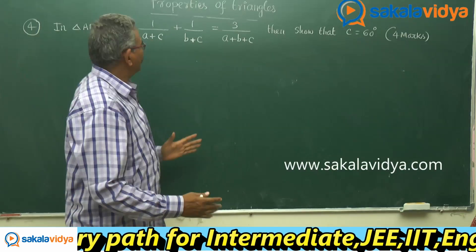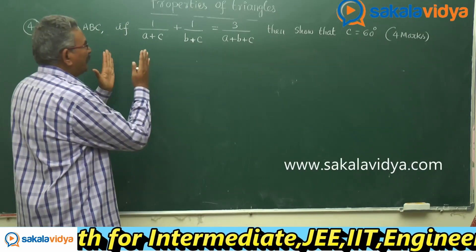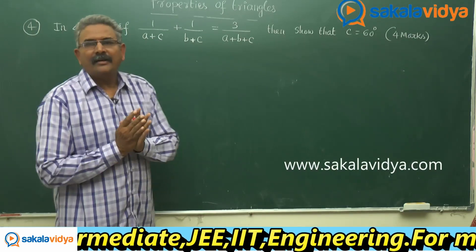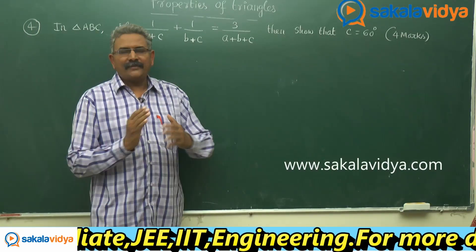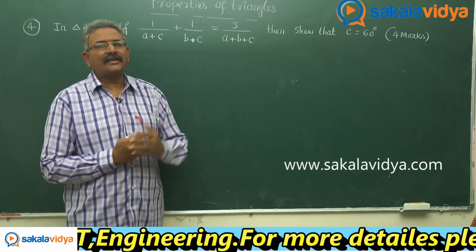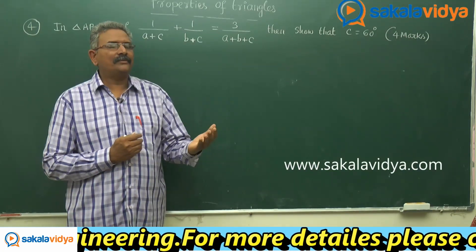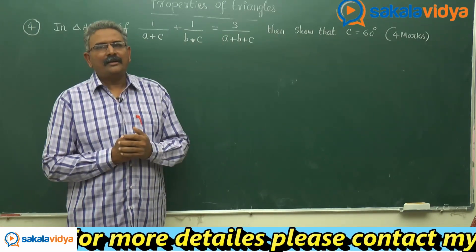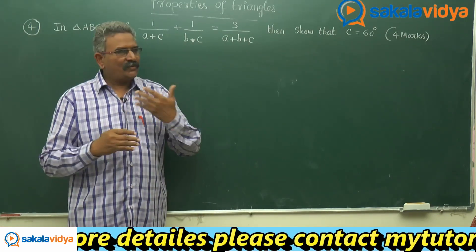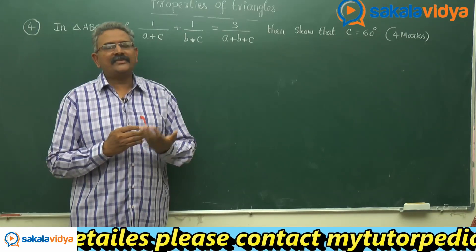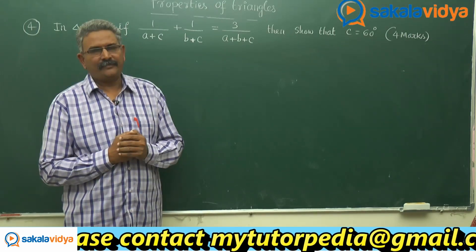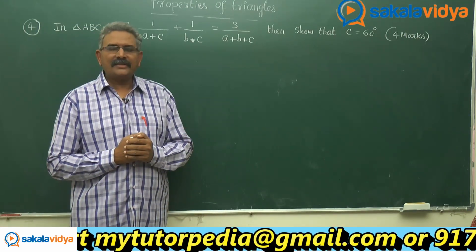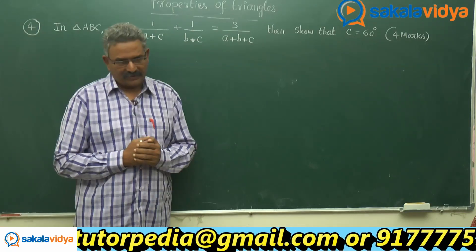So, first let us simplify this one. It is enough to prove that cos C is equal to 1 by 2. It is eventually we get C is equal to 60 degrees itself only. So, first let us solve it.